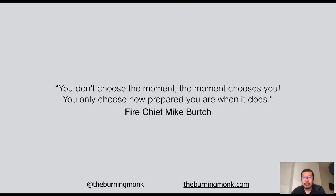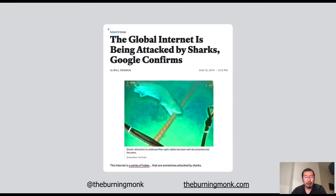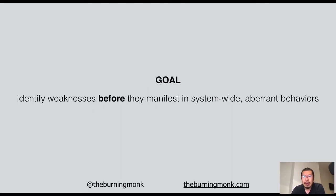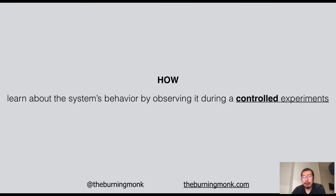Eventually everything will fail — disks get corrupted, CPU chips burn out, people can trip over cables, and sometimes you also lose network capability because sharks like to bite those underwater cables apparently. Us British people call it Sod's law, but everyone else knows it as Murphy's law: anything that can go wrong will go wrong. And the goal of chaos engineering is to identify these weaknesses in our system where failures can happen before they actually happen and cause some system-wide aberrant behaviors.